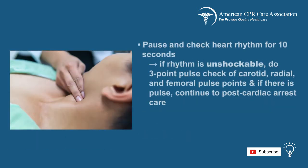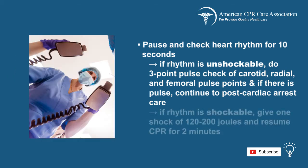Pause to check the heart rhythm for 10 seconds. If the rhythm is unshockable, do a three-point pulse check of the carotid, radial, and femoral pulse points, and if there is a pulse, then continue to post-cardiac arrest care. If the rhythm is shockable, give one shock of 120 to 200 joules and resume CPR for two minutes.